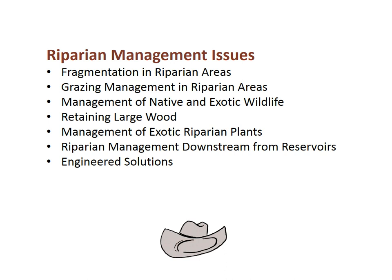Riparian management can be complicated by many situations. Common riparian management issues that may challenge managers include fragmentation in riparian areas, grazing management in riparian areas, management of native and exotic wildlife, retaining large wood, management of exotic riparian plants, riparian management downstream from reservoirs, and engineered solutions. Riparian management issues were discussed at length in RM4, and students researching and presenting on management issues should review RM4 in preparation for their assignment.